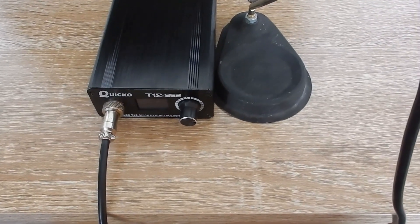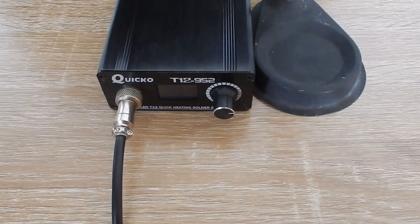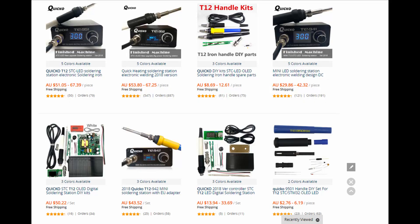Today I am going to review a cheap Chinese temperature controlled soldering station. The model number is Kwiko T12-952. You can buy this item from Aliexpress or eBay. This thing costs around 50 US dollars depending on the number of tips you choose.